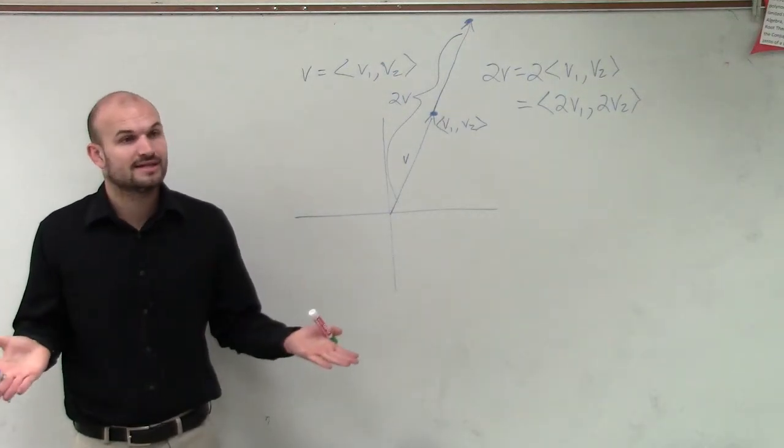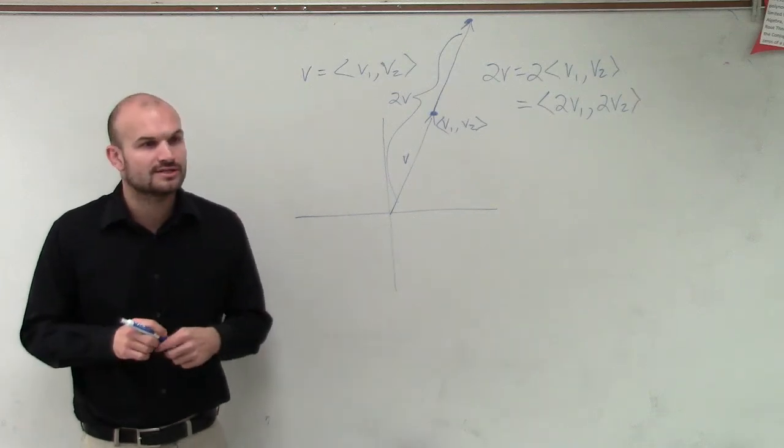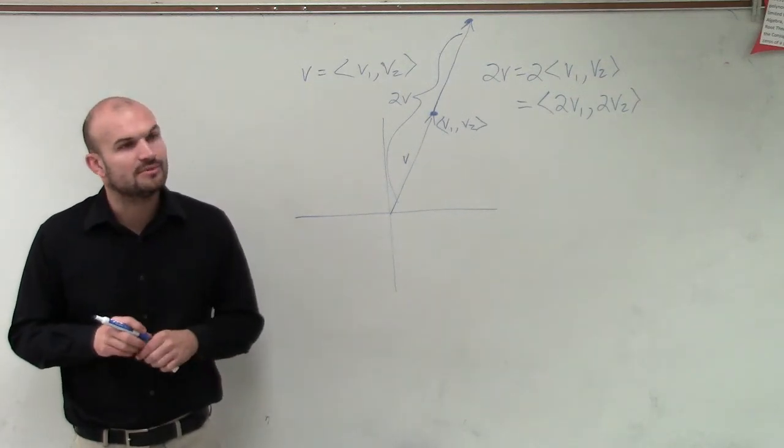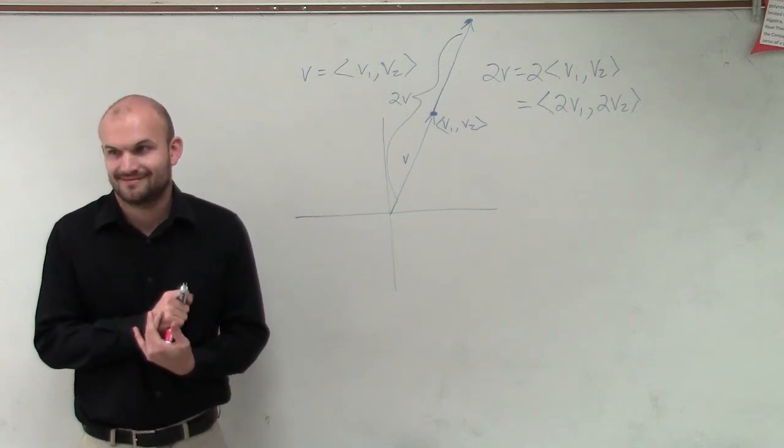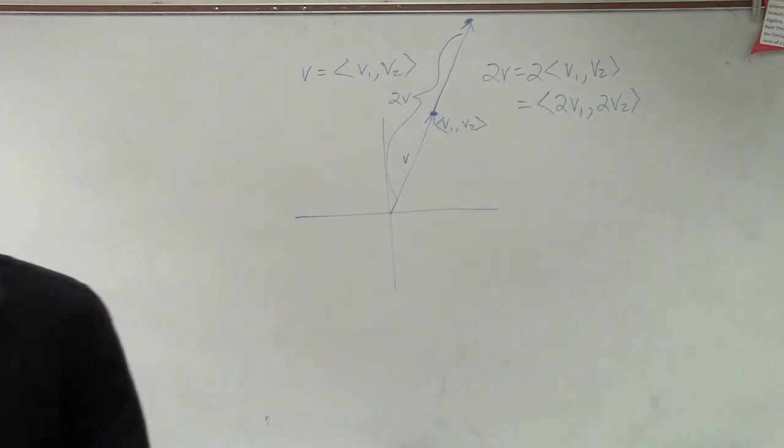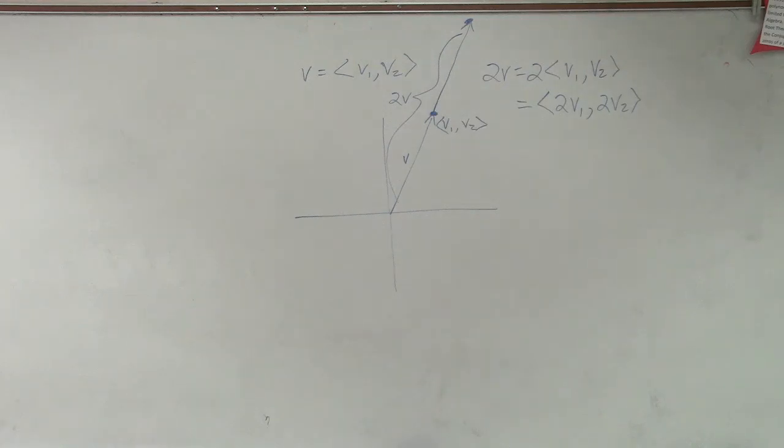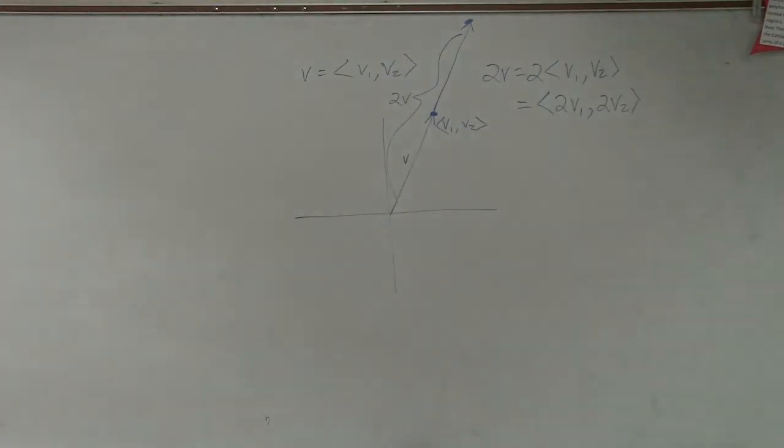All right? So we talk about addition. You just add your coordinates, your inner coordinates. And then scalars are just going to be multiplying across. Pretty cool so far? Kind of? OK. Now, we have two more things.